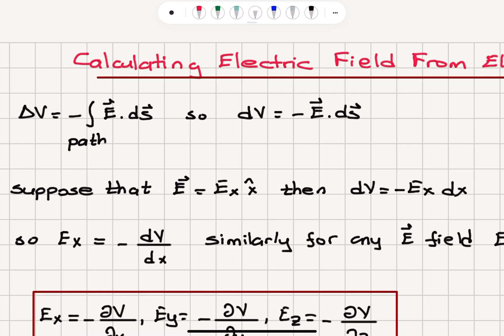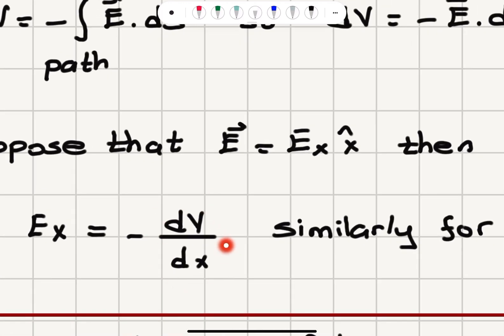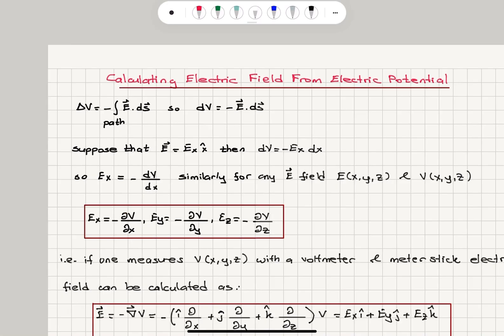You can see this equation tells us that the x-component of the electric field is minus dV dx. So it's the derivative of the potential with respect to the x-coordinate.